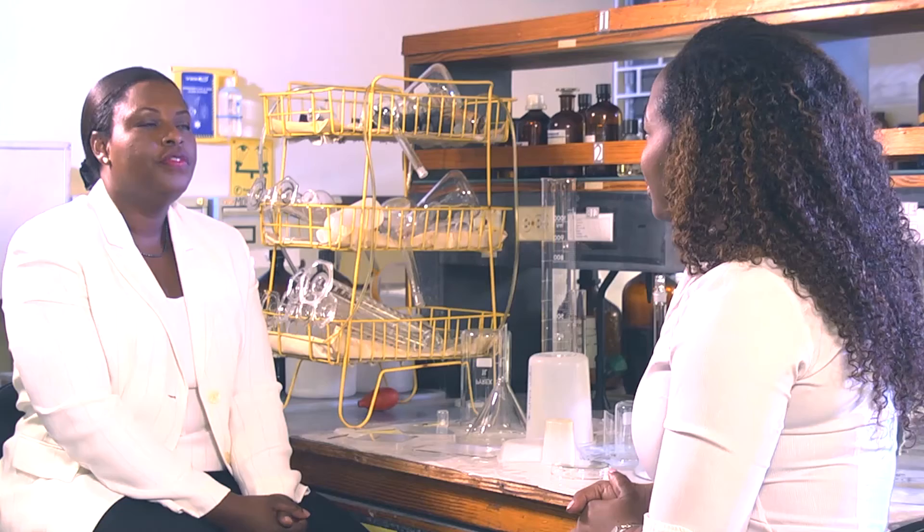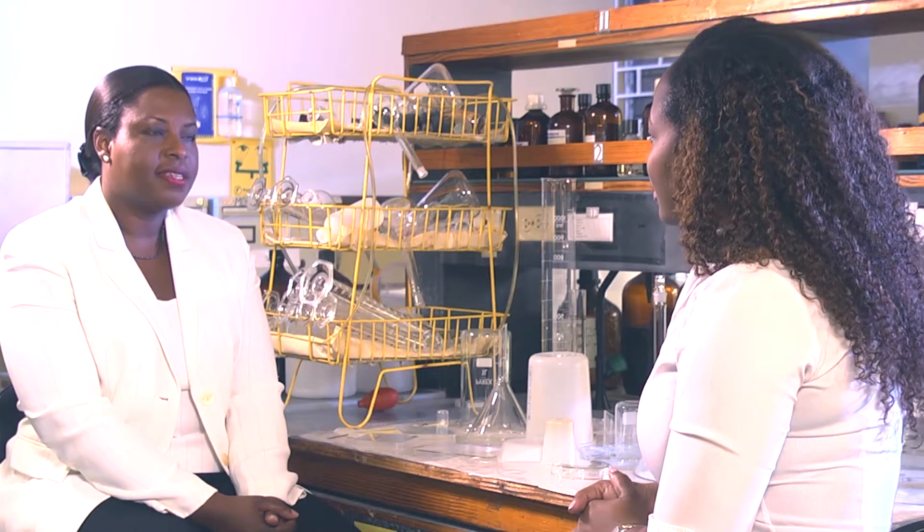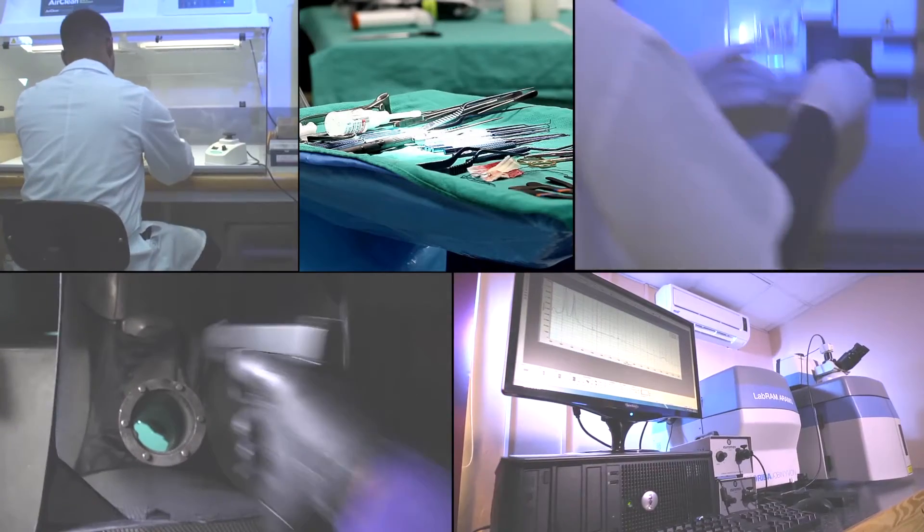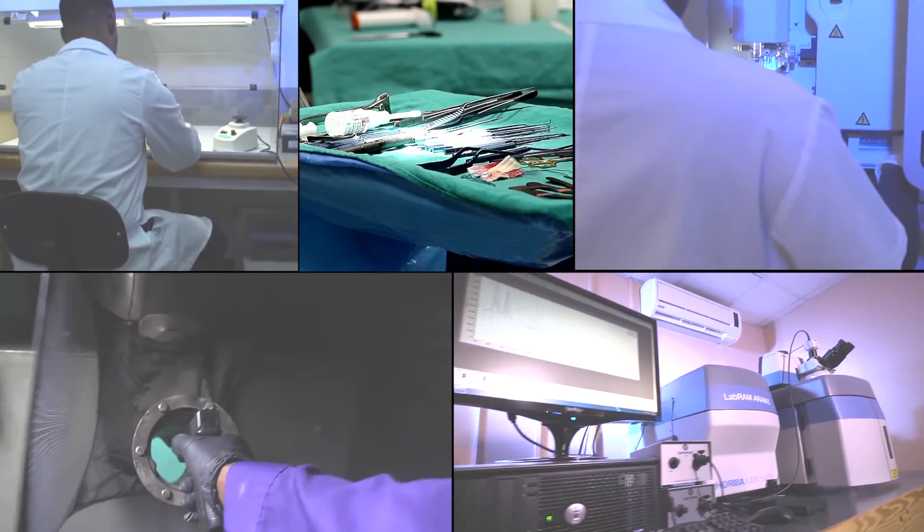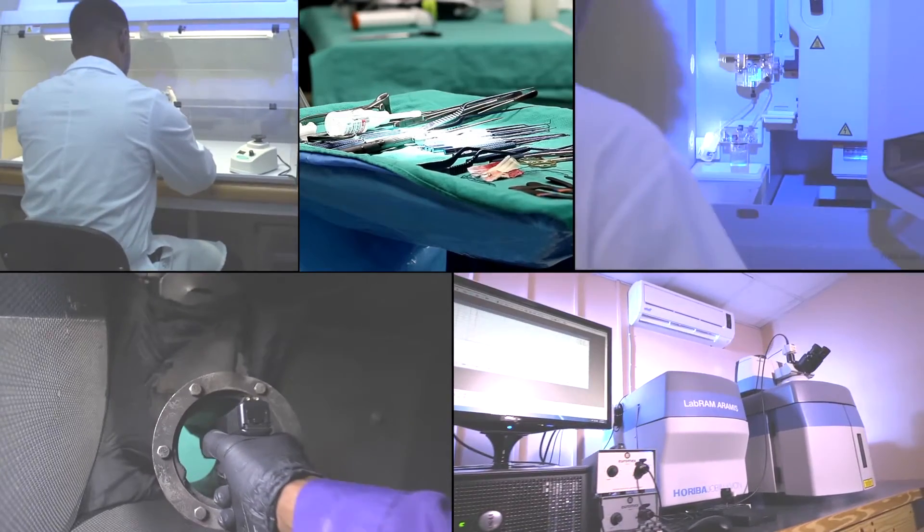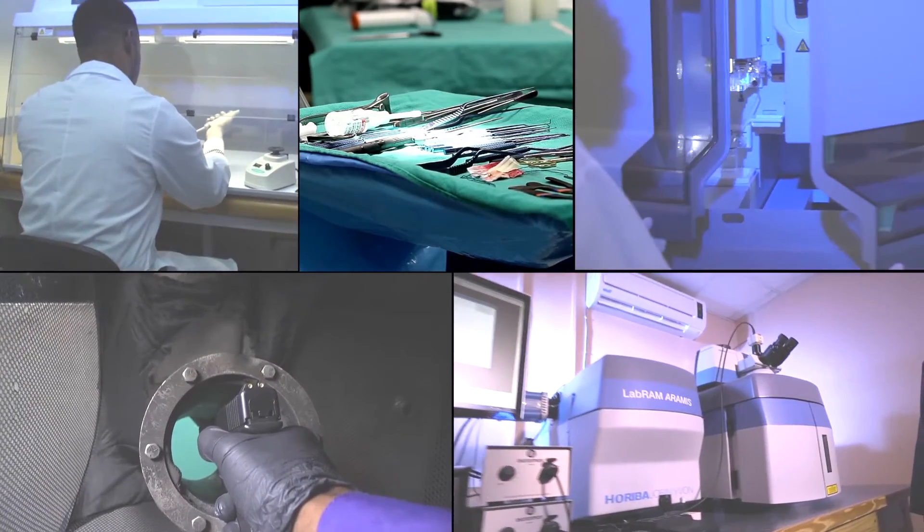What are the other departments that are here at the Forensic Institute? The Forensic Institute has five main sections: Pathology, biology, a DNA section, ballistics, and of course the chemistry department which I just mentioned.